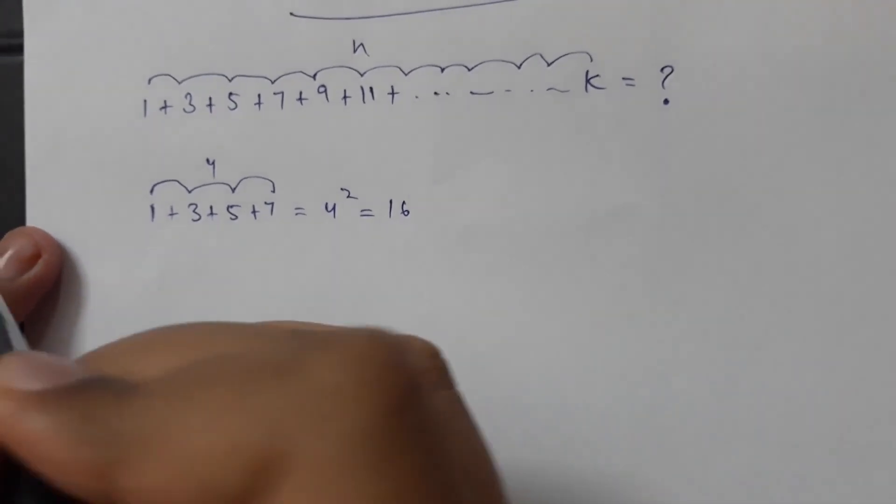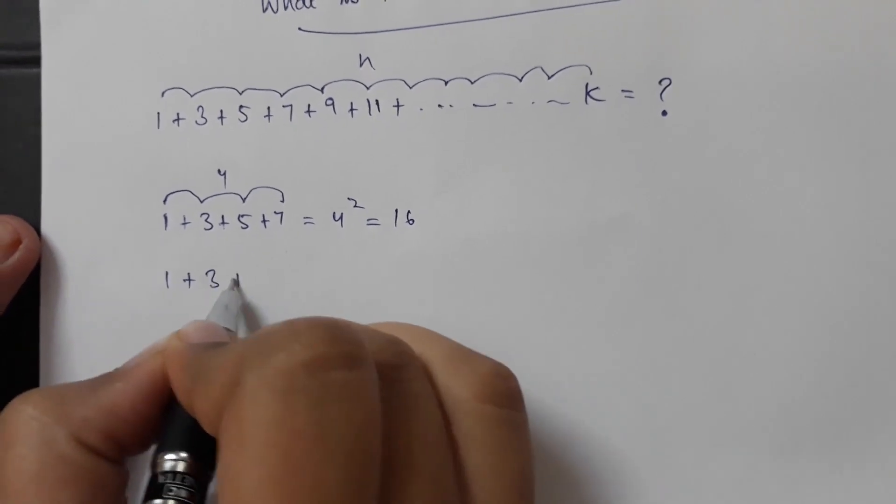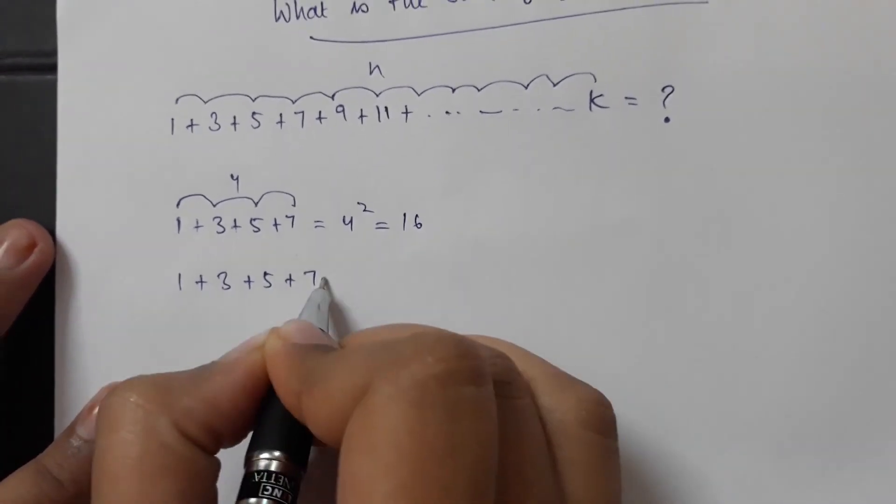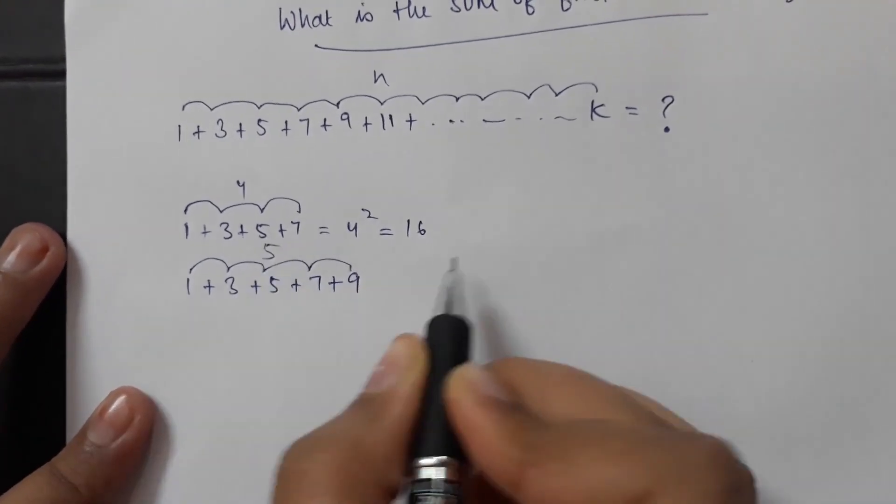Now let us try by adding the 5th odd number to this. That is 1 plus 3 plus 5 plus 7 plus 9, which has 5 odd numbers.